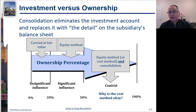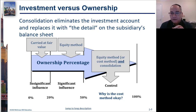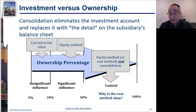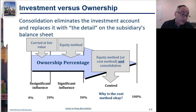If you have significant influence, fair value accounting doesn't work anymore and you need to use the equity method. And again, more than 50% means you're going to consolidate. We're going to learn to consolidate using the equity method, but you can also use the cost method.